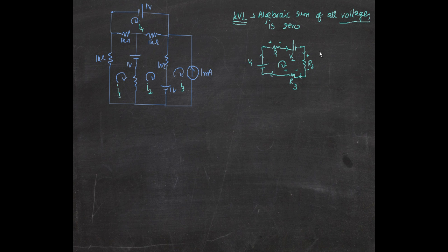So in this case, try to look at the signs — try to see what sign the voltage source and the resistors have. Since the current is going in this direction, all the resistors will have plus at the entering side and minus at the leaving side. When a current is going inside a resistor, the entering part will be plus and the leaving part will be minus.